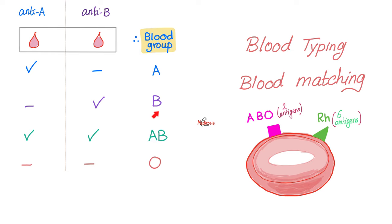If you're blood group B, you have the B antigen and you will react with the anti-B antibody on the right side. If you're blood group AB, you have both antigens — you will react on both sides. If you're blood group O, you don't have any antigens — you will not react on either side.